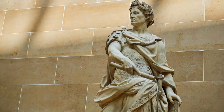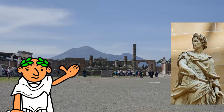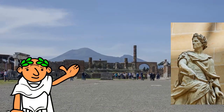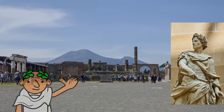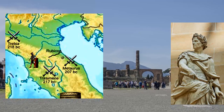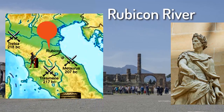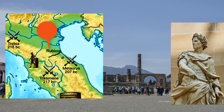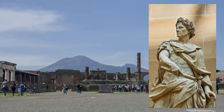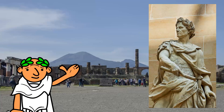While Caesar was away from Rome leading his army, Pompey gathered political support against Caesar. Civil war erupted when Caesar led his army across the Rubicon River and approached Rome. Eventually Caesar defeated Pompey and became the most powerful man in Rome.